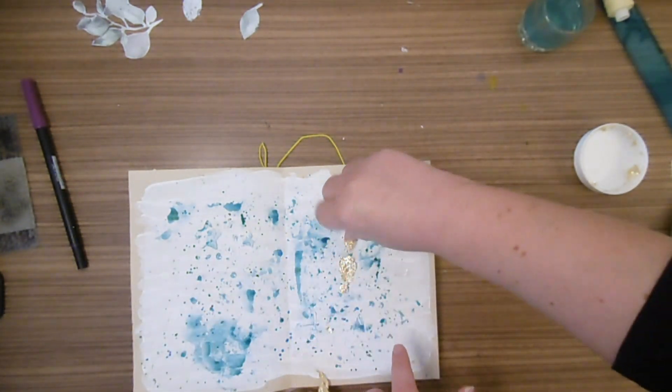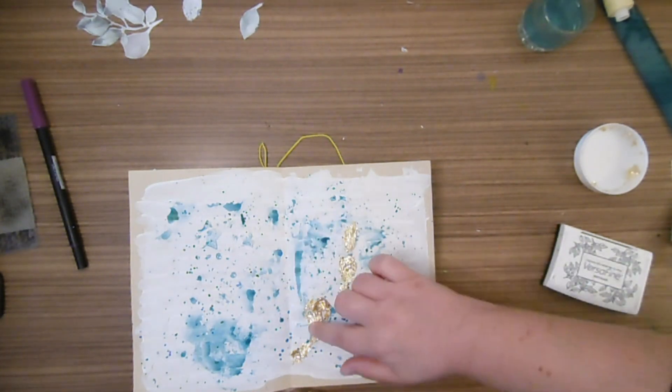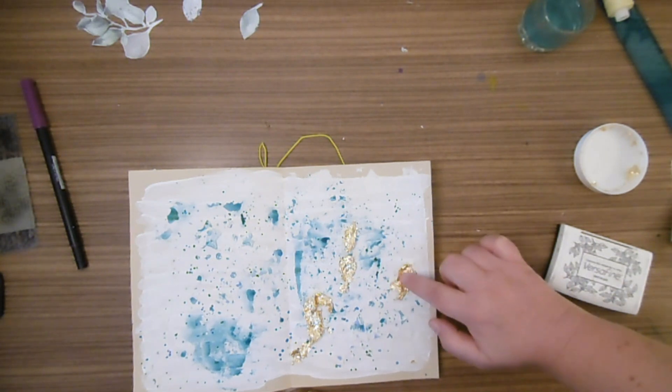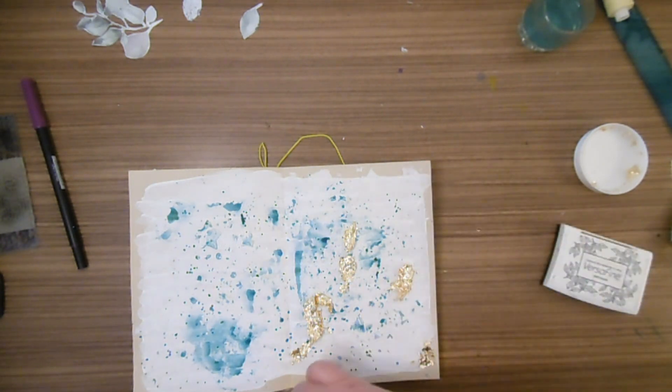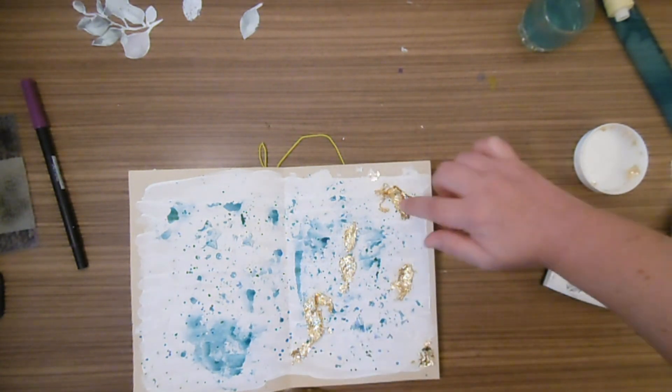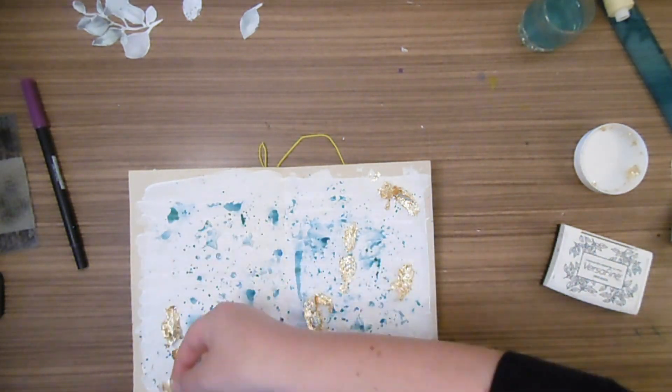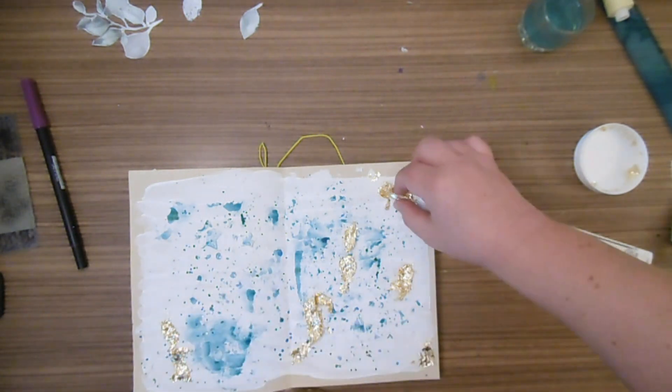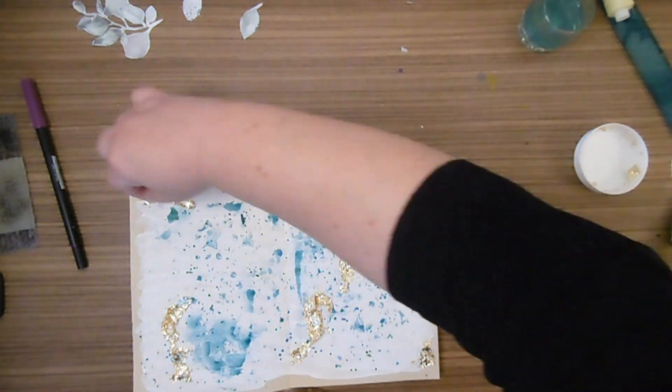Ensuite, tu peux mettre des feuilles d'or comme ça sur la colle. Il faut bien appuyer pour que la feuille d'or tienne bien à la colle. C'est pas grave s'il y a du surplus, au contraire, il nous faut tout ce surplus là. Bien tapoter pour que bien la feuille adhère à la colle.